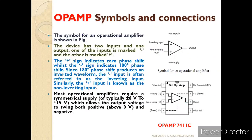Let us see the symbol and connections of the op-amp — op-amp being a short form of operational amplifier. The symbol for the operational amplifier is as shown in the figure. It has two inputs: one is the inverting terminal input and another is the non-inverting input. It also has one output, one positive supply, and one negative supply. The negative terminal indicates the inverting input and the positive terminal indicates the non-inverting terminal.